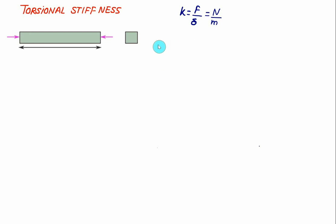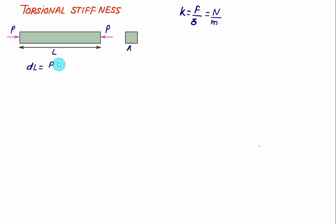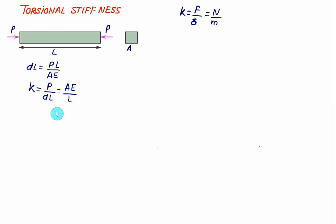The same equation can be used to find stiffness in the axial component and in the torsion member. Suppose a force P is applied to a member under compression, with length L and cross-sectional area A. The change in length DL, that is the deformation, is given as P·L divided by A·E. So by definition, the stiffness K in the axially loaded member is P divided by DL, which equals A·E divided by L.